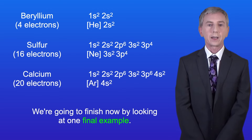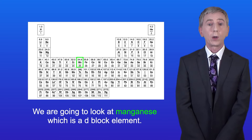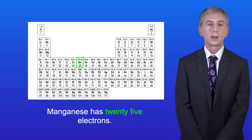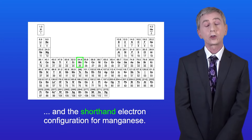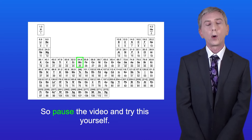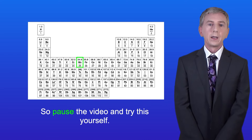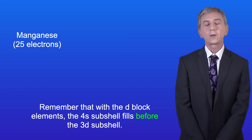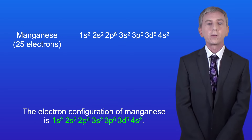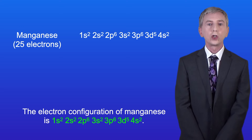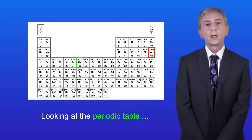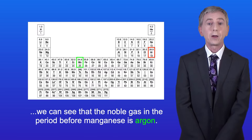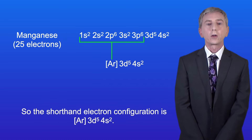We're going to finish by looking at one final example — manganese, which is a d-block element. Manganese has 25 electrons. I'd like you to work out the electron configuration and the shorthand electron configuration for manganese, so pause the video and try this yourself. With d-block elements, remember that the 4s subshell fills before the 3d subshell. So the electron configuration of manganese is 1s2, 2s2 2p6, 3s2 3p6 3d5 4s2. The noble gas in the period before manganese is argon, so the shorthand electron configuration is [Ar] 3d5 4s2.